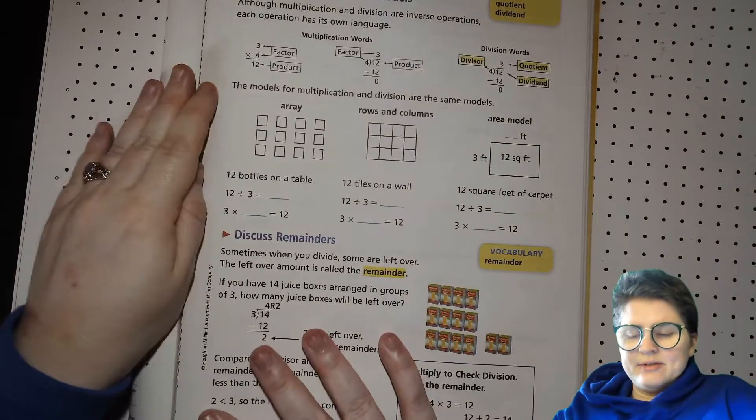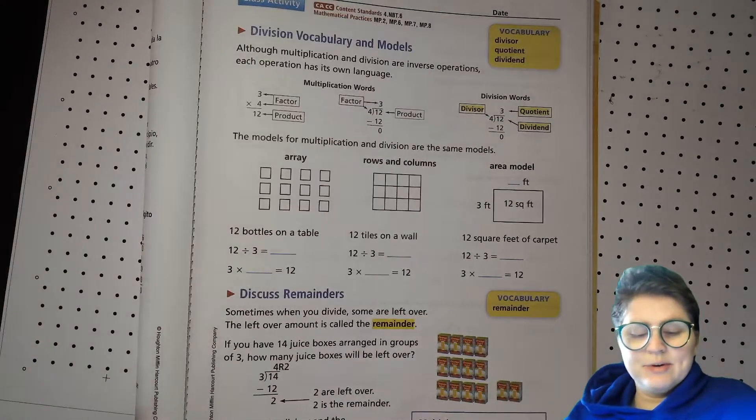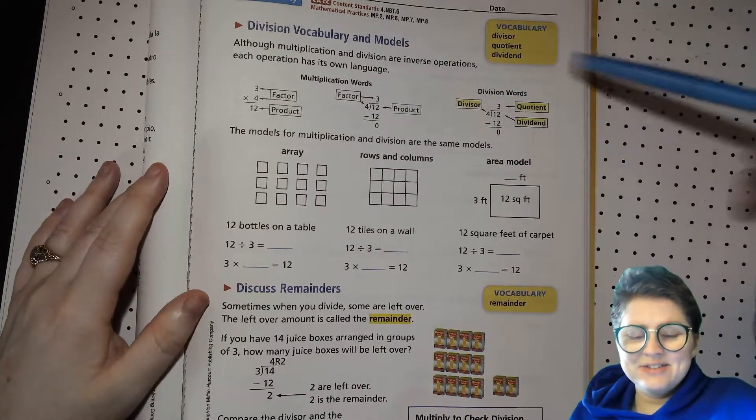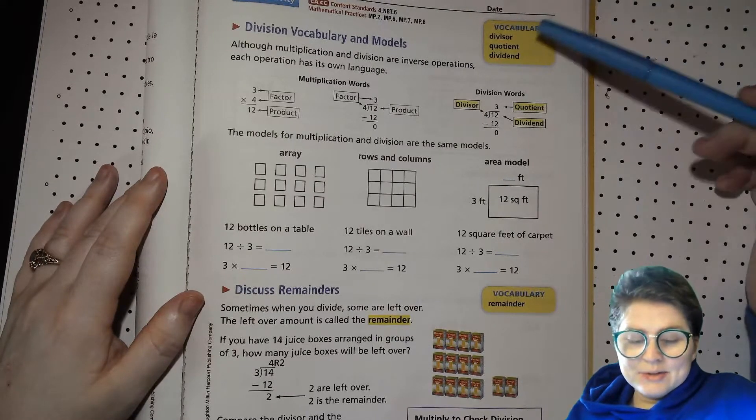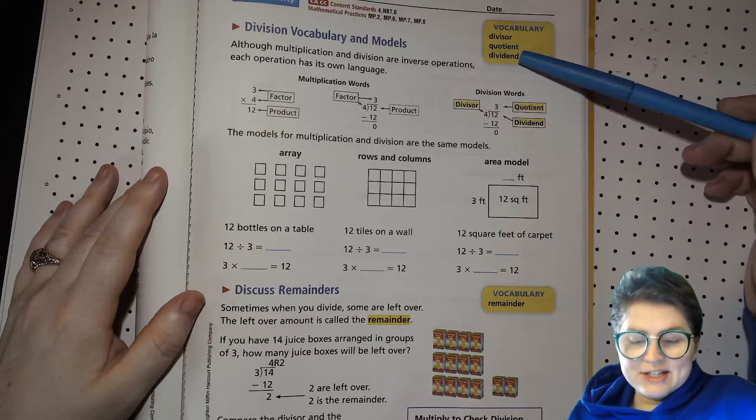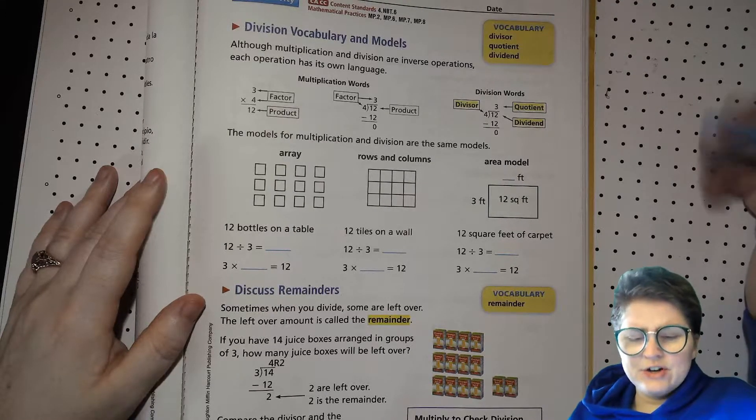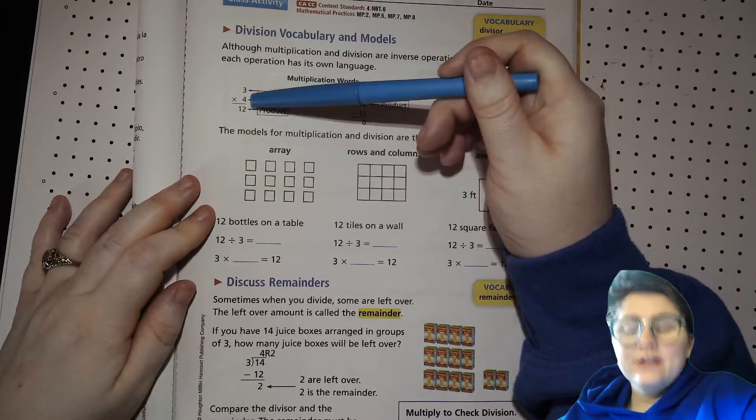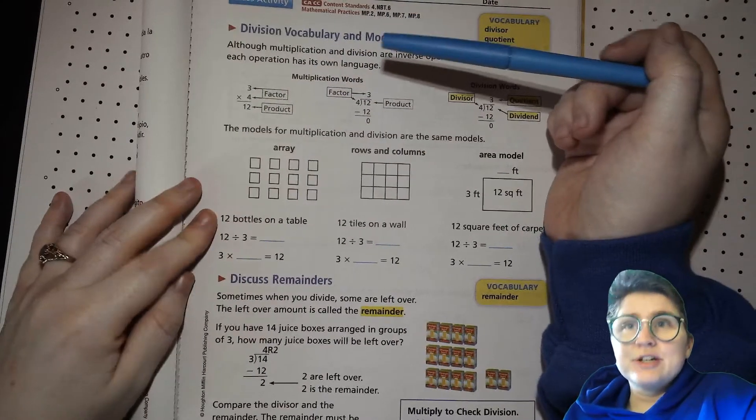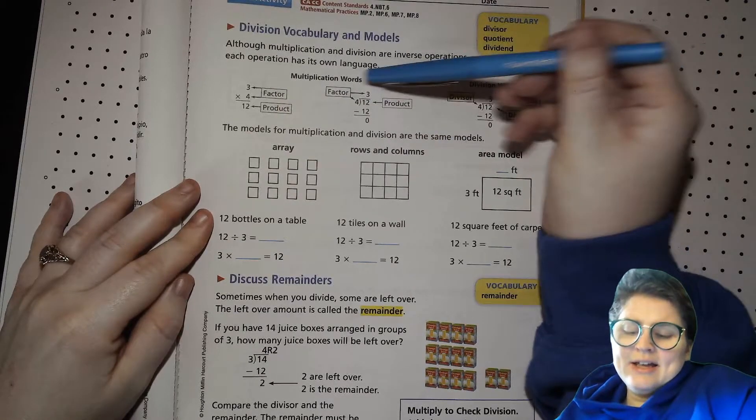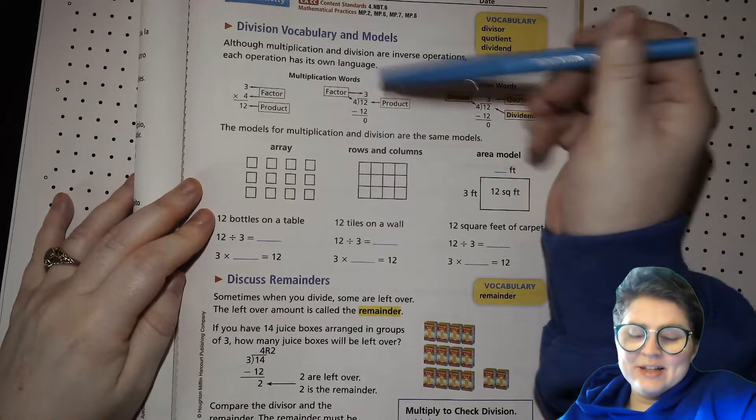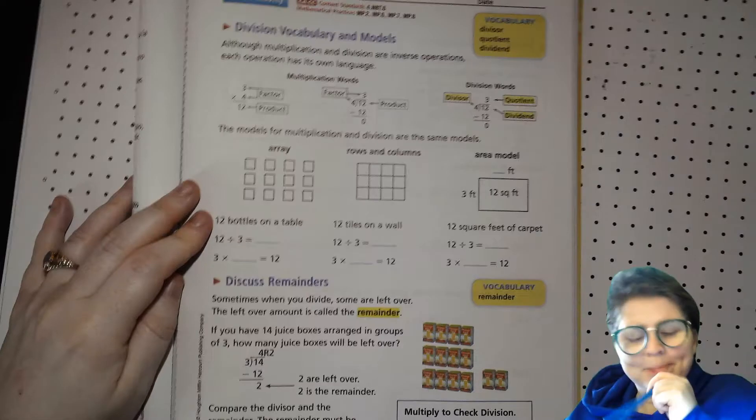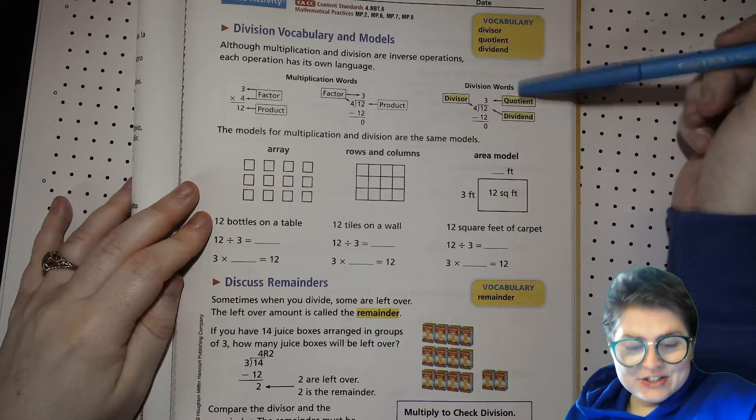We're going to start with some vocabulary because it's important that we understand the words being used when we're talking about different numbers in division problems. The words we're going to talk about are divisor, quotient, and dividend. Although multiplication and division are inverse operations, each operation has its own language. In multiplication, the things that got multiplied with each other are the factors and then the answer to multiplication problem is the product. If you're trying to do the reverse of it, the product would be inside the little house and then the factors will be outside on the side and on the top.